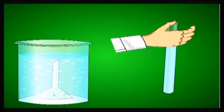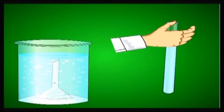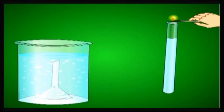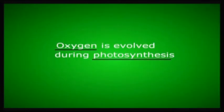The splinter glows brightly, indicating the presence of oxygen. And this oxygen has been released by the hydrilla twigs because of photosynthesis which occurred. Thus we can say or prove that oxygen is evolved during photosynthesis.